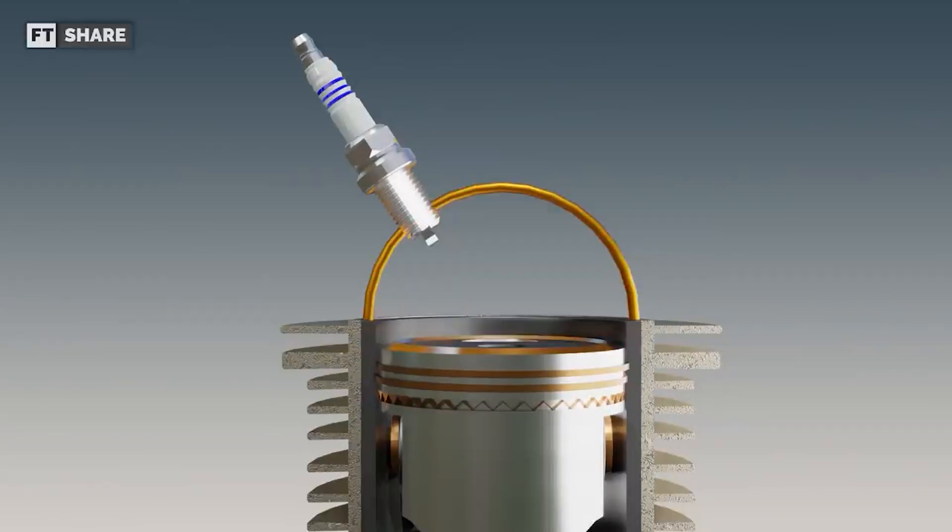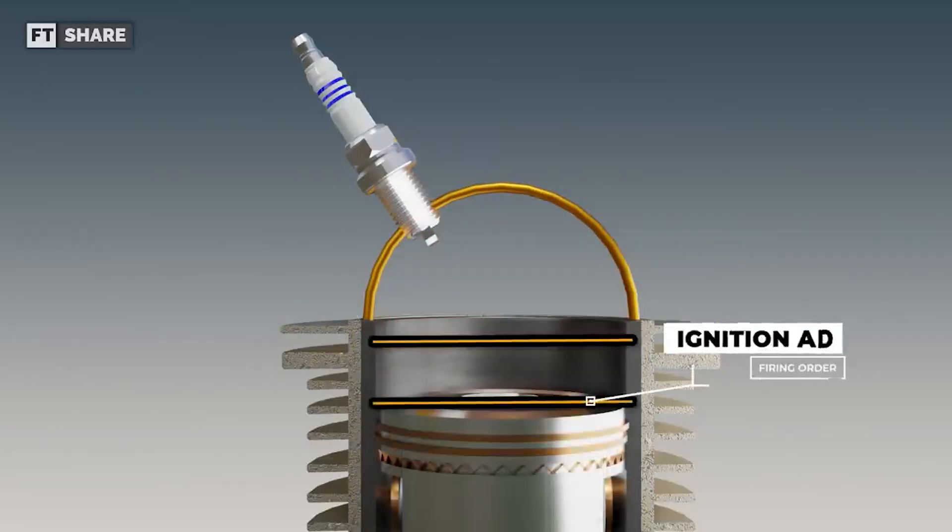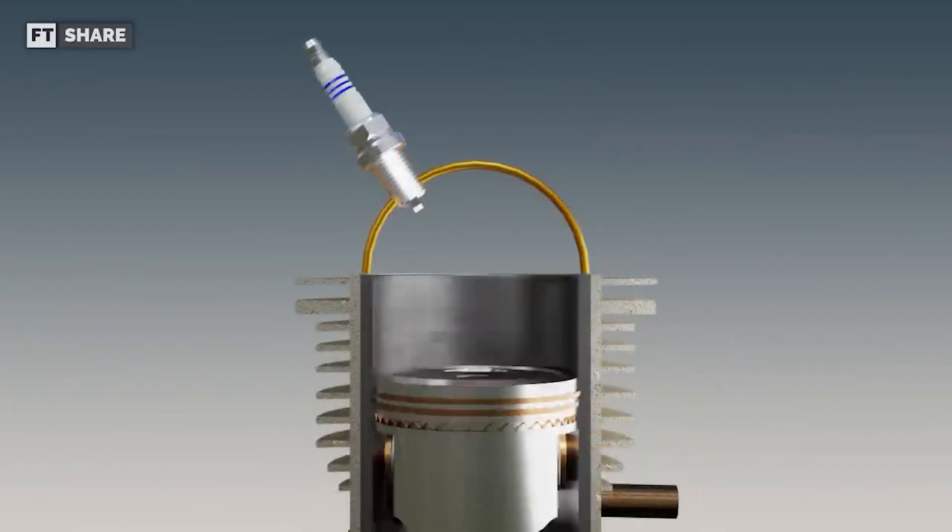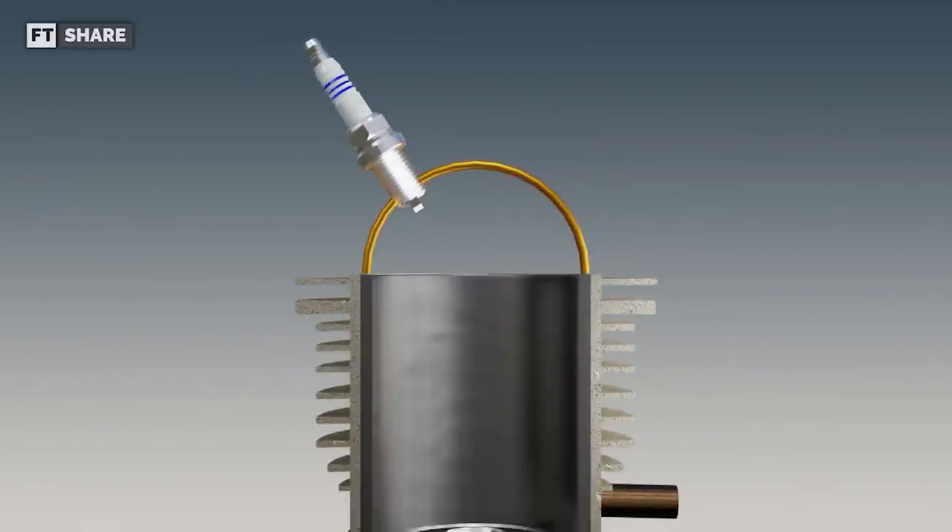Another way to address this issue is to start the combustion process earlier. This is called ignition advance, which is designed to counteract the short combustion time when the engine is revved at high RPMs. The faster the engine moves, the shorter the combustion time becomes.